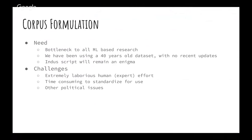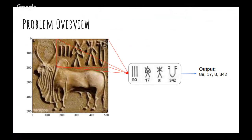This problem is called the corpus formulation problem, where we try to formulate a corpus from photographs of freshly excavated artifacts. Given an image or scan of an Indus seal, we try to locate where the text patch is, read those symbols, and map them to numberings according to Mahadevan's corpus. Each symbol has a particular numbering in the corpus, so ultimately we need a number sequence representing the text in that image.